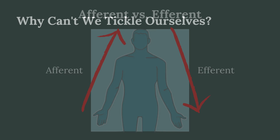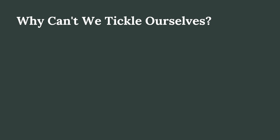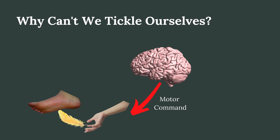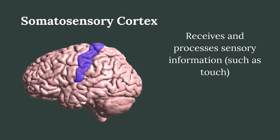Now that we understand what sensory neurons and motor neurons are, we can start answering the question of why we cannot tickle ourselves. When we try tickling ourselves, for example on our foot, a motor command is sent by our brain to the muscles in our hands to make them tickle our foot. At the same time, a copy of the motor signal is also sent to the somatosensory cortex in our brain, a region associated with receiving and processing sensory information regarding touch.